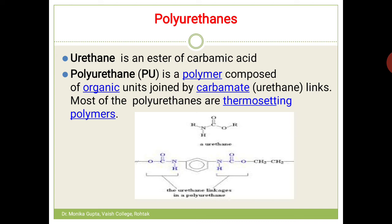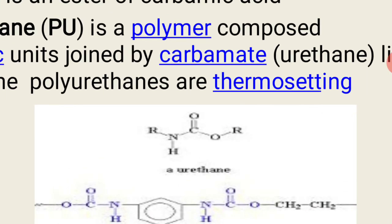But if you make its ester — R-NH-COO-R — replacing H with R, you get the ester of carbamic acid, which we call urethane. Urethane is stable. We need to make a polymer from this urethane with carbamate linkages, also called urethane linkages: -O-C-O-N-H-.